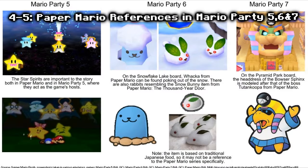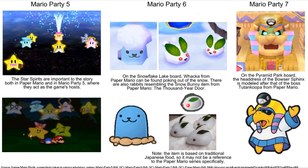Paper Mario references in Mario Party 5, 6, and 7: there are many references to Paper Mario in several Nintendo GameCube Mario Party games, especially Mario Party 5, 6, and 7. For example, the star spirits from the first game appear in Mario Party 5, some characters appear in Mario Party 6, and Tutankoopa does a cameo in Mario Party 7.